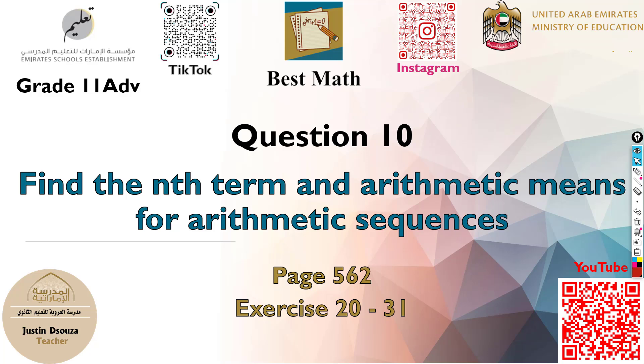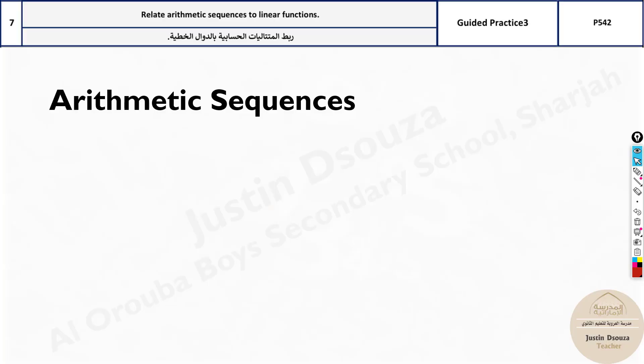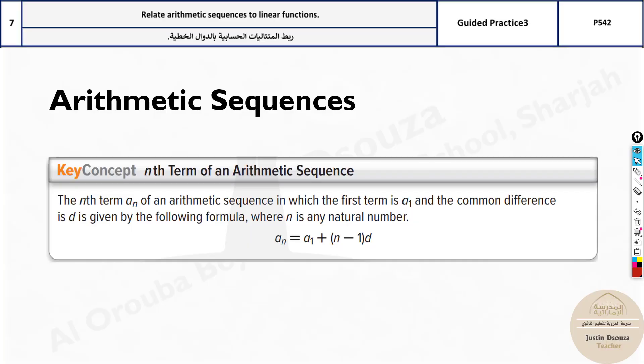Question 10 is to find arithmetic means and the nth term for arithmetic sequences. The formula is very simple, we have done this before. a_n equals the first term plus n minus 1 times the common difference, that is d.